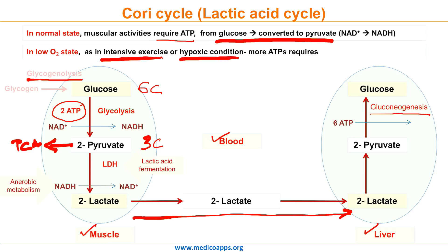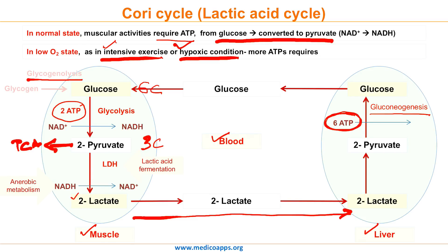This entire process of gluconeogenesis costs the liver 6 ATPs per glucose. But this seems to be a worthwhile cost, as glucose is made available for the skeletal muscles through the blood to generate further ATPs. This completes the Cori Cycle. Essentially, the Cori Cycle involves production of lactate from pyruvate in muscle cells under intense exercise or low oxygen conditions. This lactate is transported to the liver via blood, where it is converted back to pyruvate and then to glucose using 6 moles of ATP, making glucose available again for the muscle.